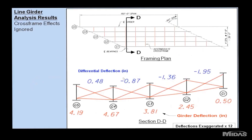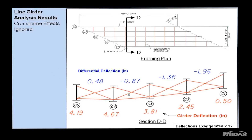Looking at that in section, you get an irregular shape across the width of the structure. The blue numbers on top are differential deflections between adjacent girders; the red numbers on the bottom are the girder deflections. By ignoring the cross-frames we get a deflected shape that can't really happen — the cross-frames connecting these girders are very stiff and they torsionally restrain the girders so this shape isn't possible. The conclusion is that we need to consider those cross-frames in the analysis.